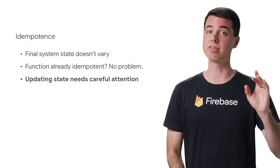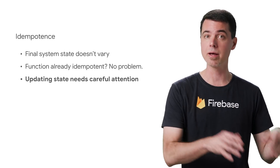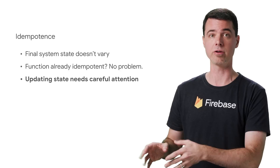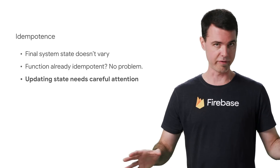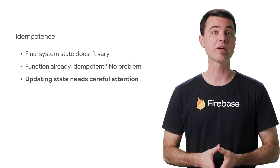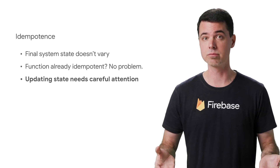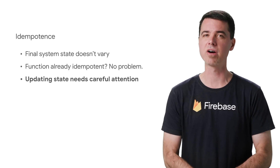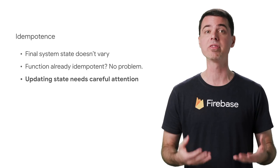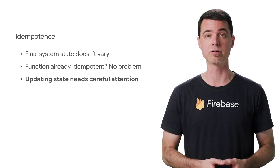But if you're trying to do something such as incrementing a counter, where you read, modify, and write back a new value, it's a whole different story. If your function ends up getting triggered multiple times for an event, you'll end up with an incorrect value. So how do you make this function idempotent and stop all but the first invocation from updating the value?